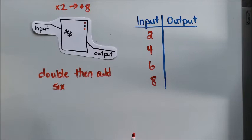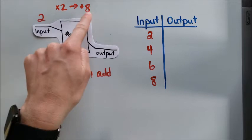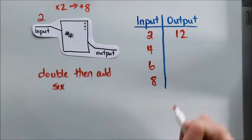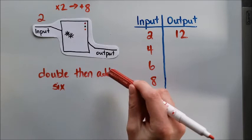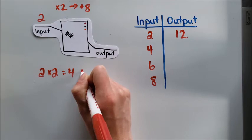So I'm going to start with plugging in that two. When I plug in the two, I'm going to multiply by two first. So that'll give me four. And then I'm going to add eight. So four plus eight is twelve. Now, sometimes it's helpful to actually do the work. I would say two times two equals four.